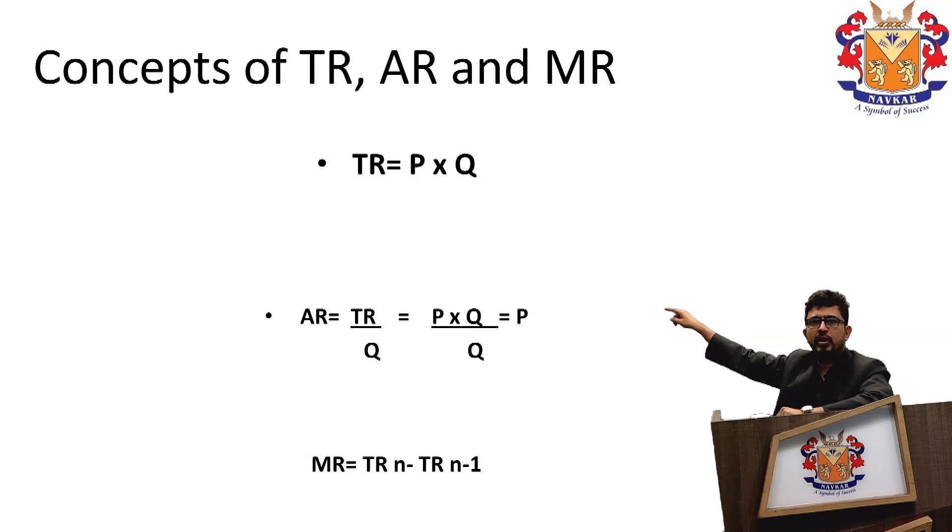we substitute total revenue by P into Q. So it becomes P into Q upon Q. If Q and Q will get cancelled from numerator and denominator, what will be left is the price. So in any market, average revenue is always equal to the price of the product. And finally, you have the concept of marginal revenue.